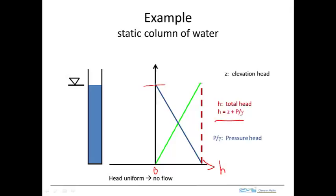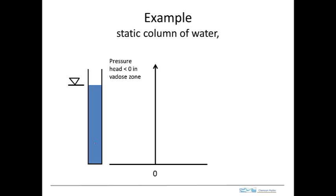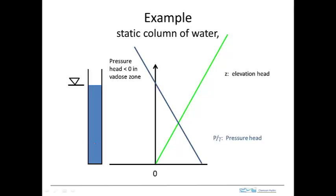We add them together to get the total head. We've seen this before — this is working fine for the saturated zone. Now, for the VEDO zone, we're going to apply it above the water table. We extend the elevation head up, and we extend the pressure head out further. When we add these two together, the total head is still equal to a constant value. For equilibrium, there's no flow — everything is in equilibrium.